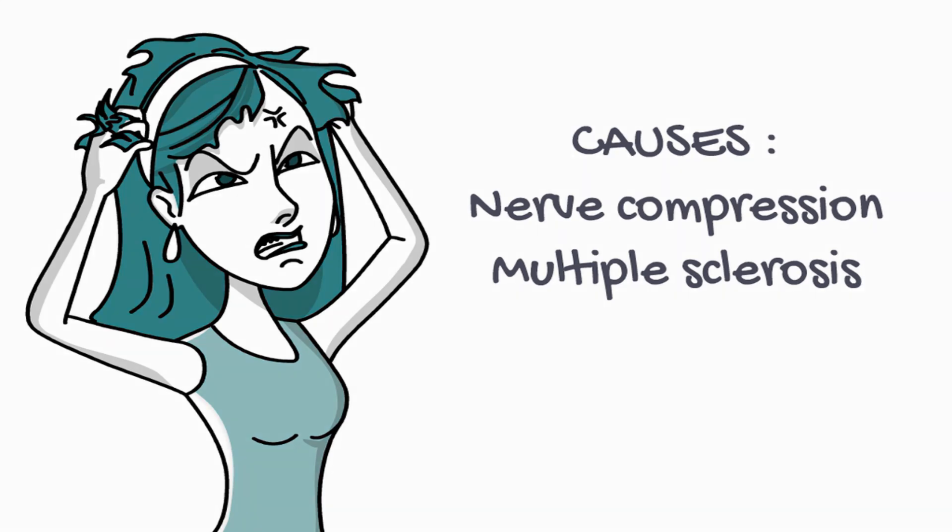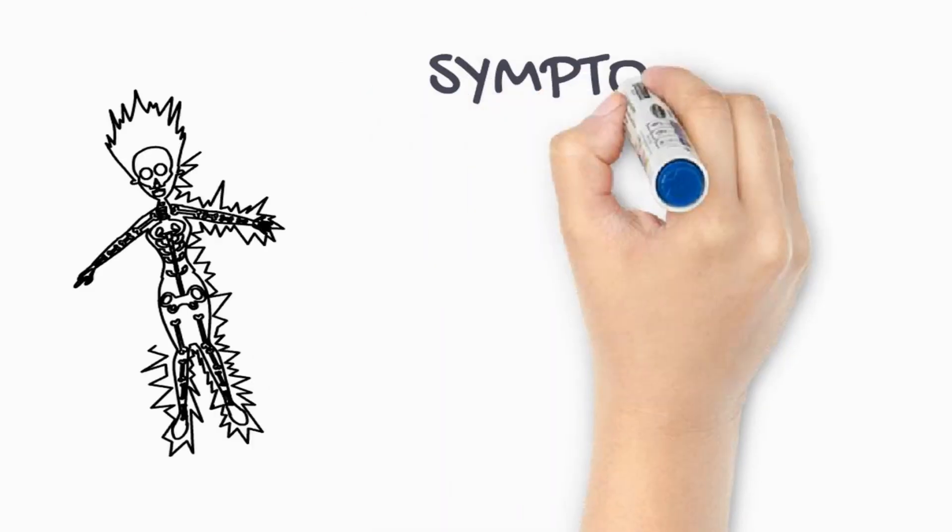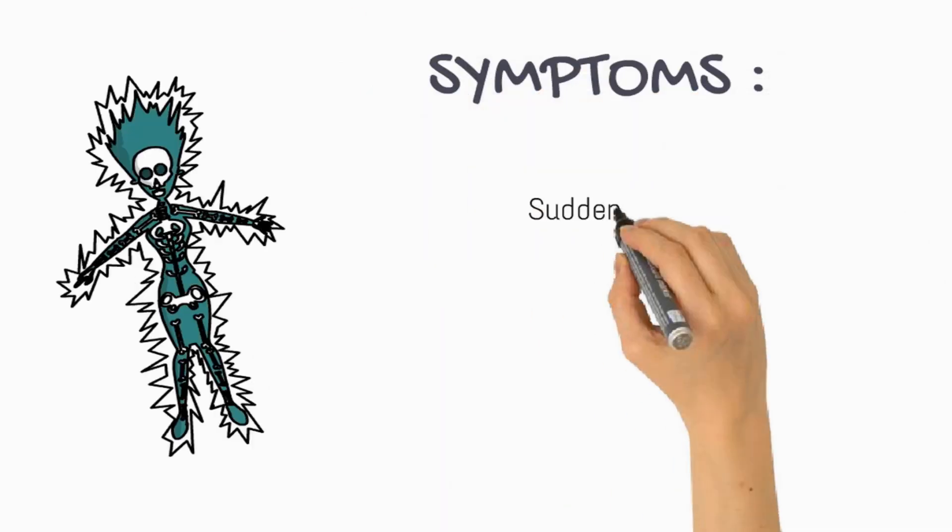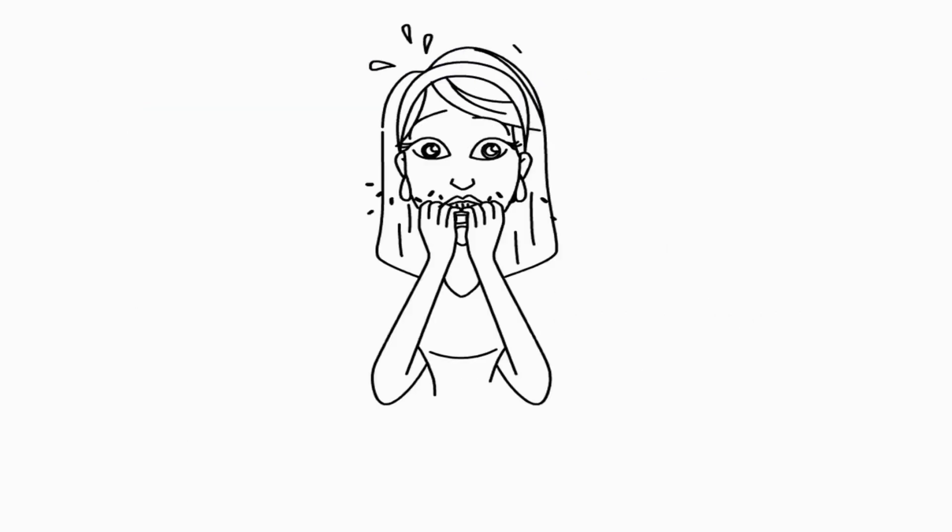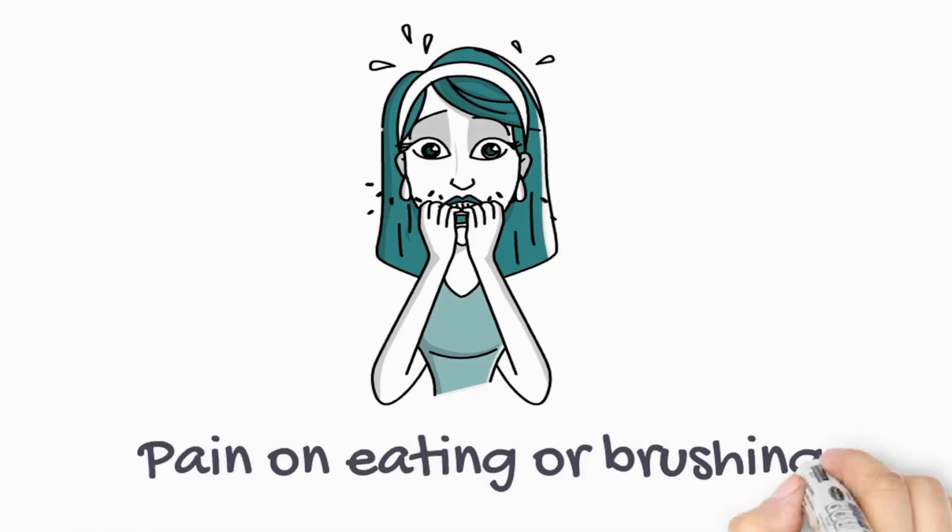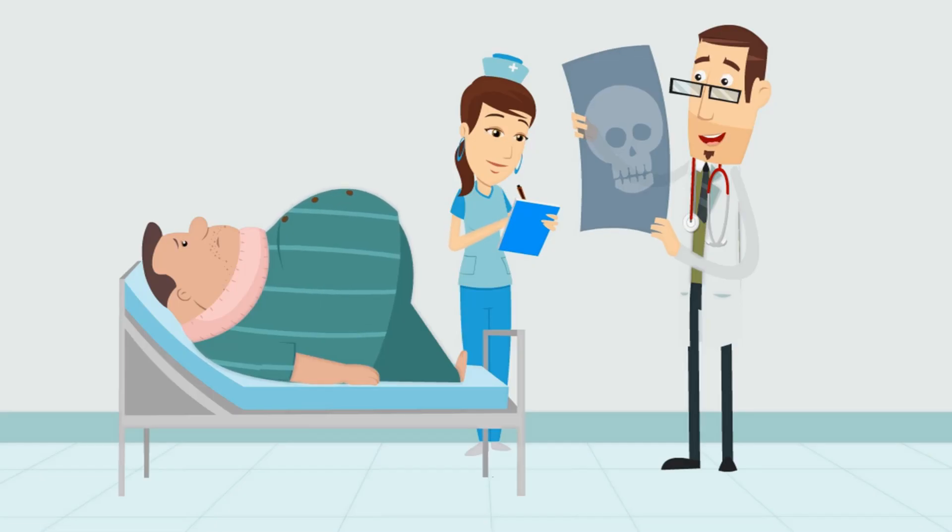The individual complains of short, sudden, and multiple episodes of sharp electrifying pain on the face, observed while eating or sometimes while brushing. It goes off throughout the day. Trigeminal neuralgia is often misdiagnosed with dental pain. X-rays don't tell you that you have trigeminal neuralgia.